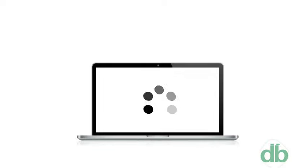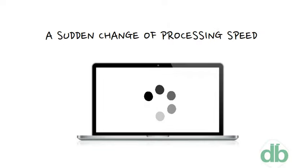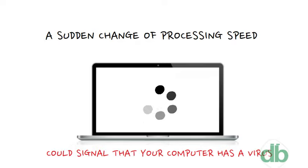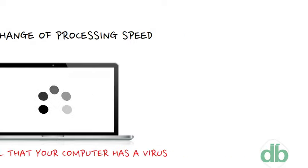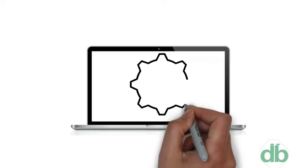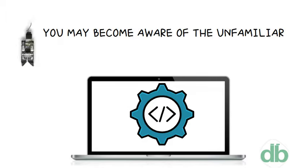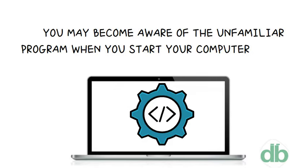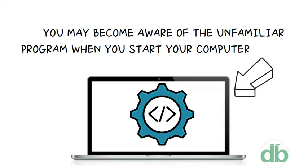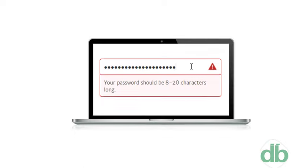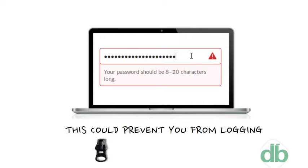Unusually slow computer performance — a sudden change of processing speed could signal that your computer has a virus. Unknown programs that start up when you turn on your computer — you may notice an unfamiliar program when you start your computer or by checking your computer's list of active applications. Unusual activities like password changes — this could prevent you from logging into your computer.